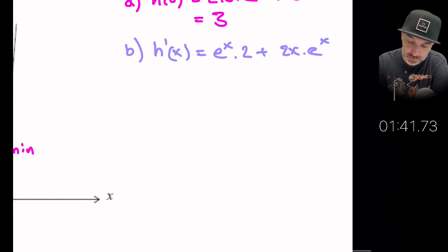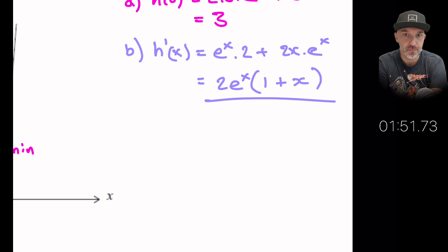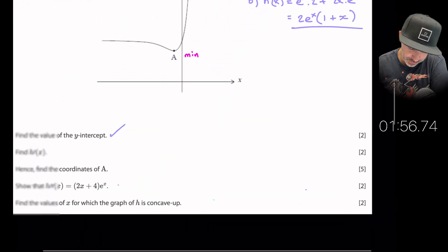It doesn't ask us to tidy up but I will do because it looks a little bit neater if I write it like this: 2e^x(1 + x). Okay so there's the derivative of h, the first derivative. That is another two marks. So let's go and do part c which is hence find the coordinates of A.